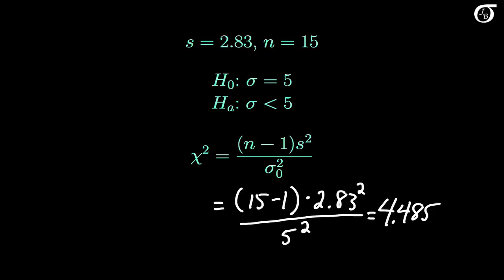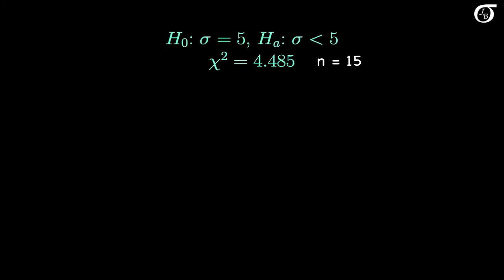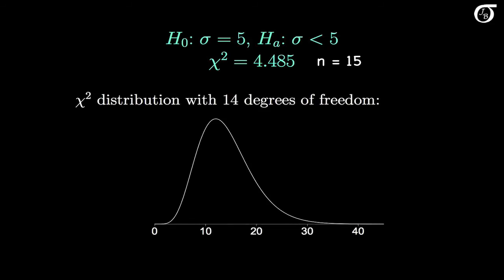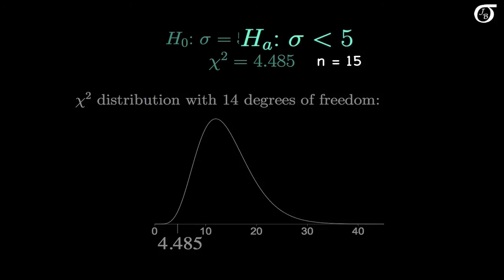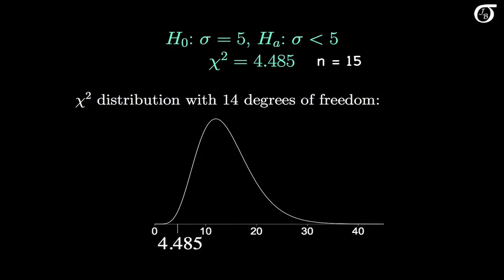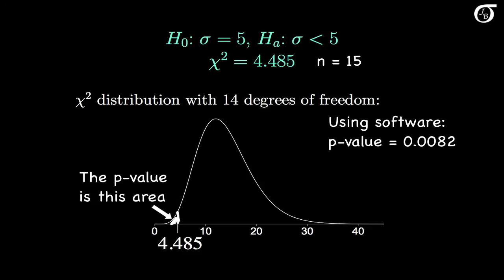Now we're going to get the p-value from the chi-square distribution. Here are the hypotheses and the observed value of the chi-square test statistic. I'm drawing in the chi-square distribution with 14 degrees of freedom, and the observed value of the test statistic, 4.485, falls right here on this distribution. With this alternative hypothesis that sigma is less than 5, values far out in the left tail give evidence against the null hypothesis and in favor of the alternative. The p-value is the area under this curve to the left of 4.485. Using software, we can find that this area is 0.0082 — so that's the p-value.